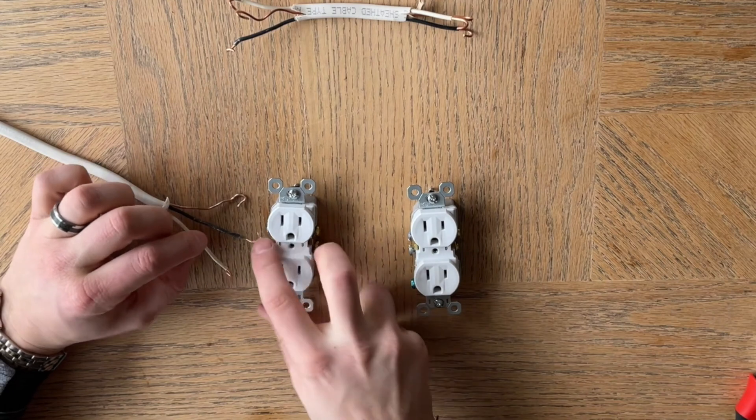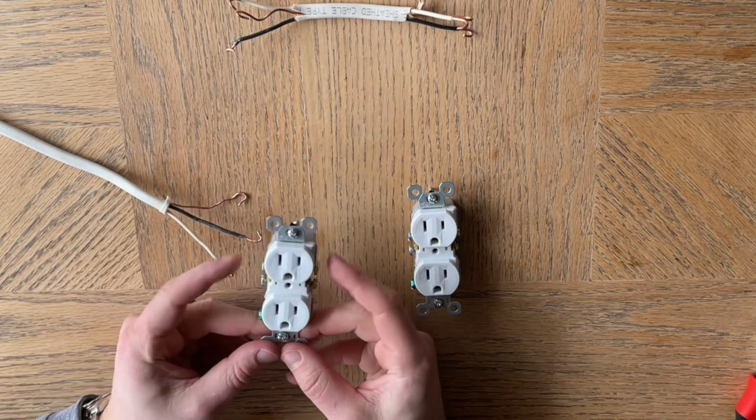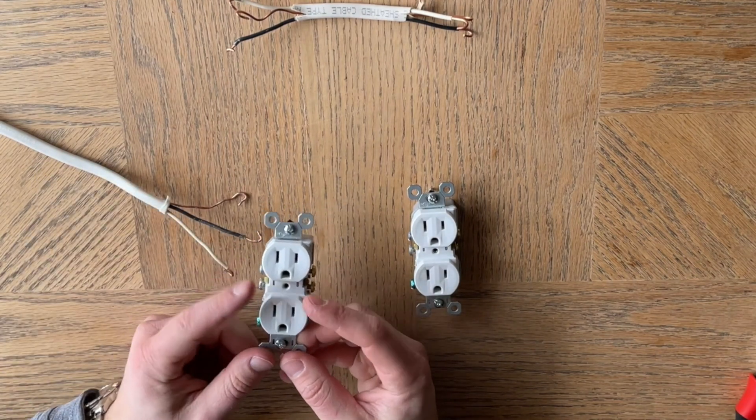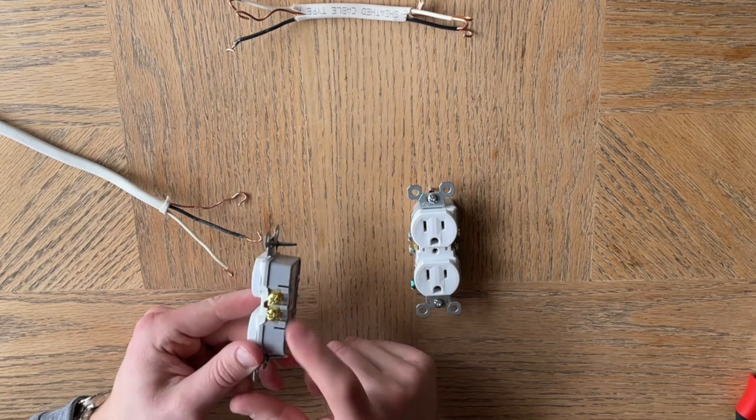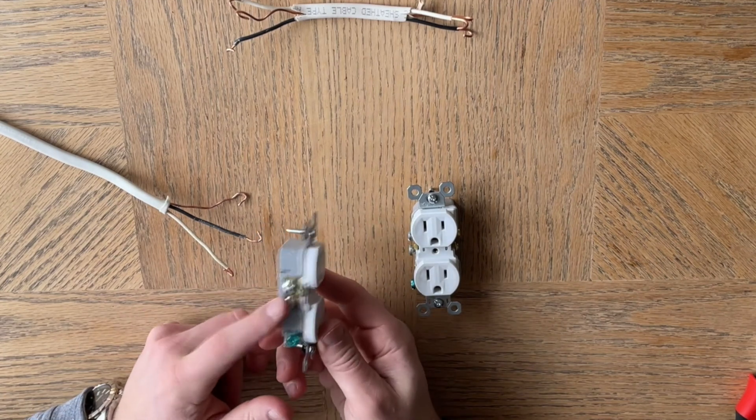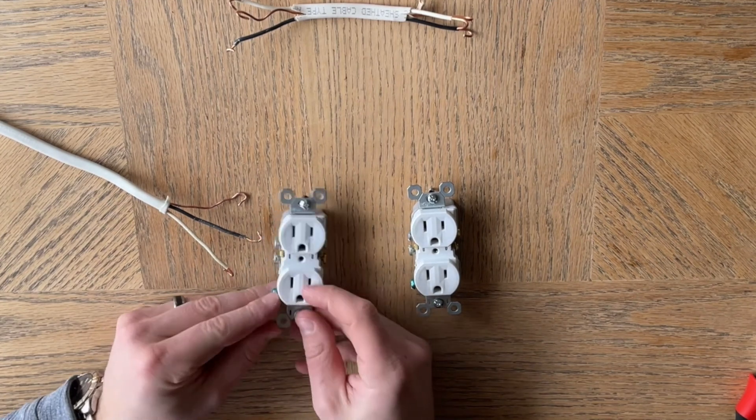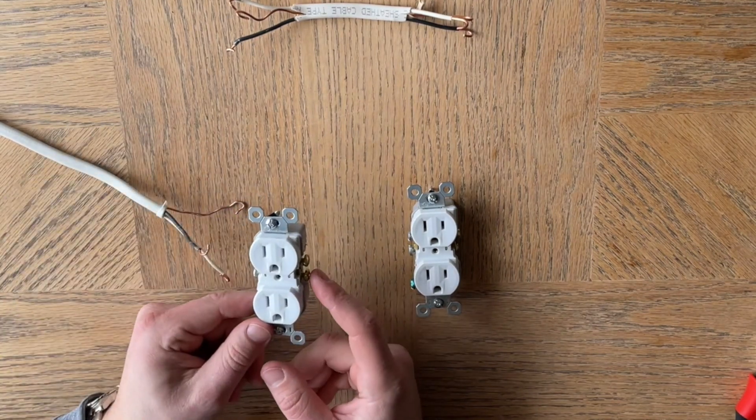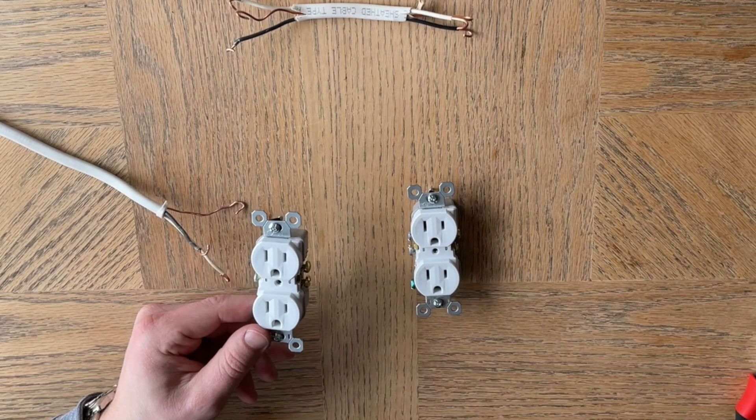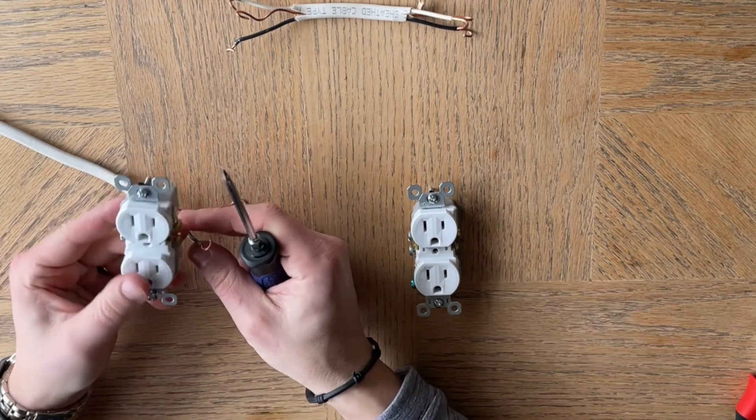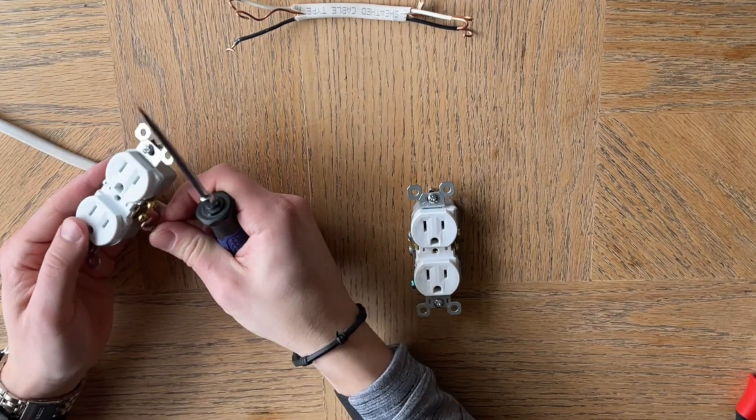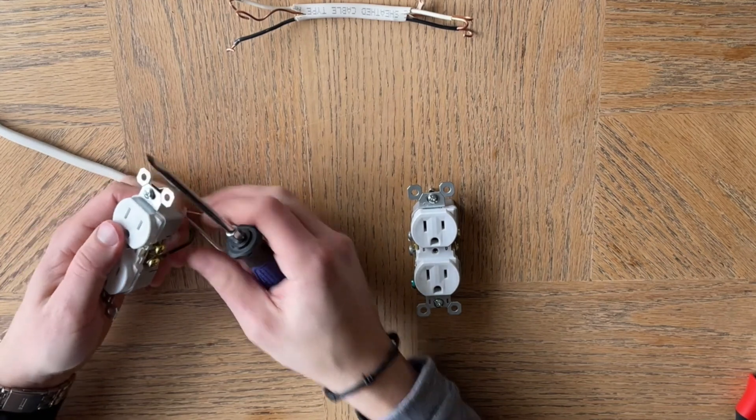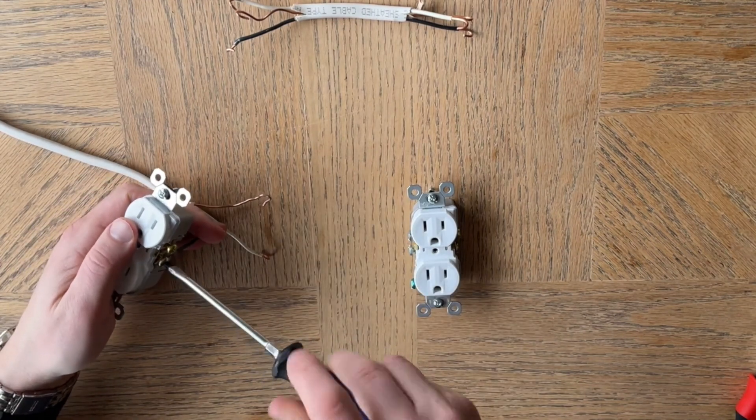So where do you put it? Top or bottom? Black or gold or silver? Well, you take the black wire that's going to go on the gold side, and so we'll wire that up now. Top or bottom doesn't really matter. I like to put them on the bottom, so we can screw that into the bottom right here.